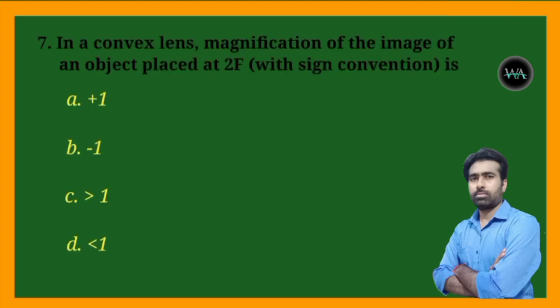Next question: in a convex lens, magnification of the image of an object placed at 2f with sign convention is — plus 1, minus 1, greater than 1, or less than 1?